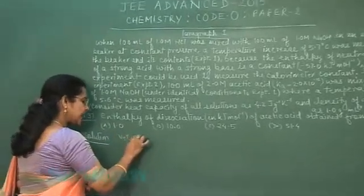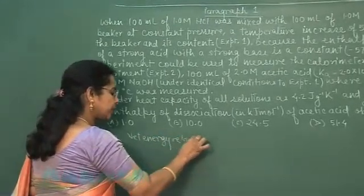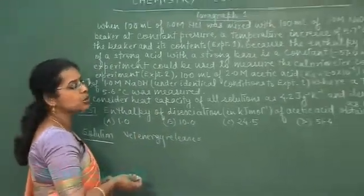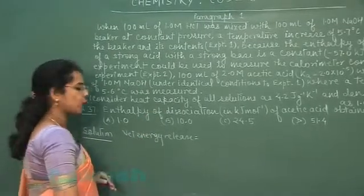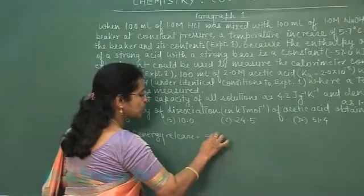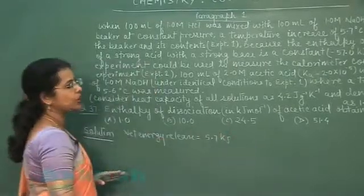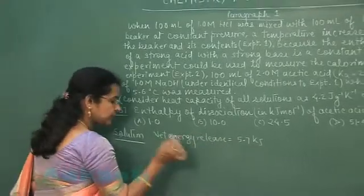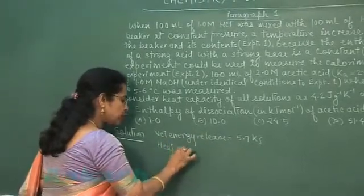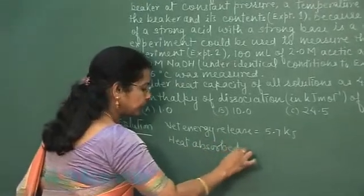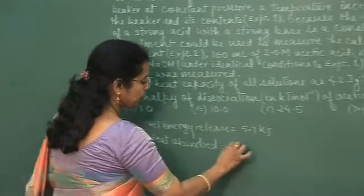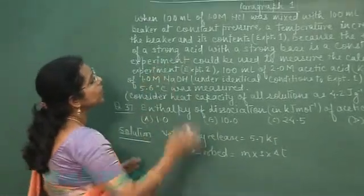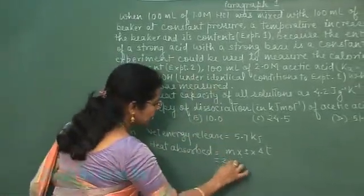So net energy released: if 1 mole water is formed, enthalpy changes 57.0 kilojoule. In this reaction only 0.1 mole water is formed, so net energy released will be 5.7 kilojoule. Now this heat energy is used to increase the temperature of calorimeter. So heat absorbed, this will be equal to M S delta T. Mass of solution 100 milliliter plus 100 milliliter, this is 200.